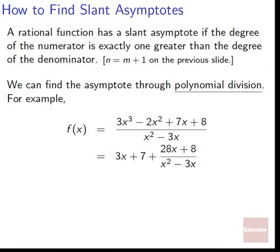Now let's talk about how to find slant asymptotes. A rational function has a slant asymptote if the degree of the numerator is exactly one greater than the degree of the denominator — that is, n equals m plus 1. We can find the asymptote through polynomial division. For example, with 3x cubed minus 2x squared plus 7x plus 8 over x squared minus 3x, the numerator has degree 3 and the denominator degree 2, which is exactly one greater, so we have a slant asymptote.